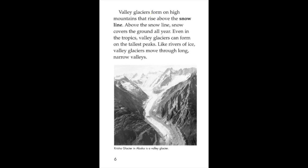Valley glaciers form on high mountains that rise above the snow line. Above the snow line, snow covers the ground all year. Even in the tropics, valley glaciers can form on the tallest peaks. Like rivers of ice, valley glaciers move through long narrow valleys.